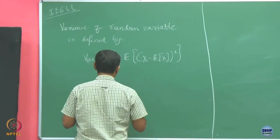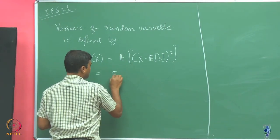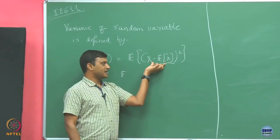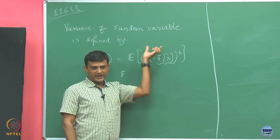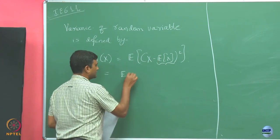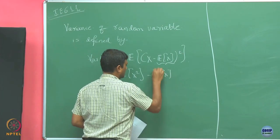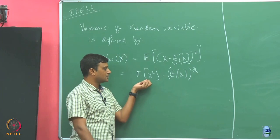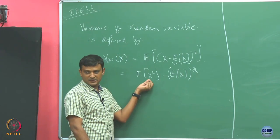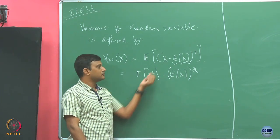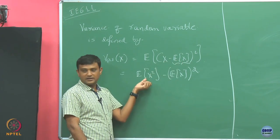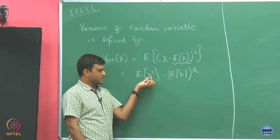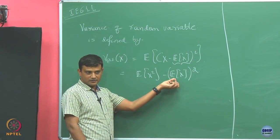If you expand this value, you will see that what you are removing from X is a constant — the mean value. So this is another random variable, what we call the centered random variable, and then we square it and take the expectation. If you expand this, variance equals the expected value of the square of the random variable — what we call the second moment — minus the square of the mean. The first moment is my simple expectation, the second moment is expectation of X squared, and the mth moment is expectation of X to the power m.